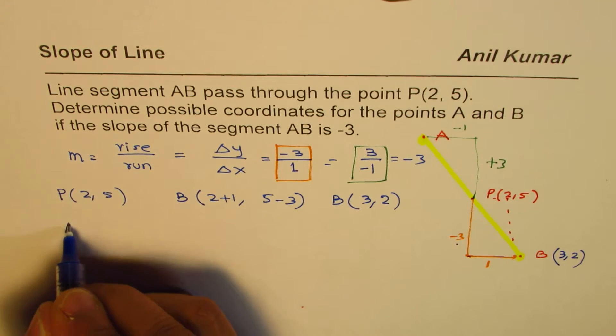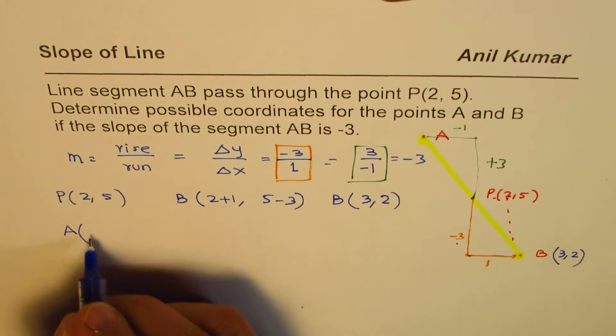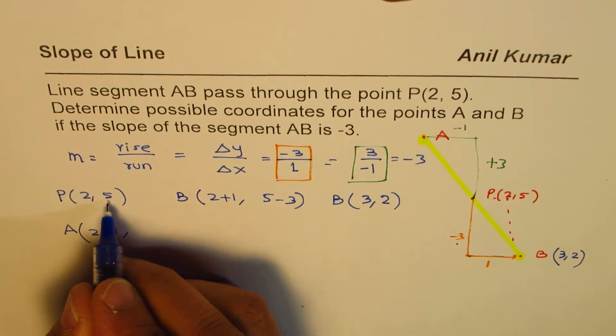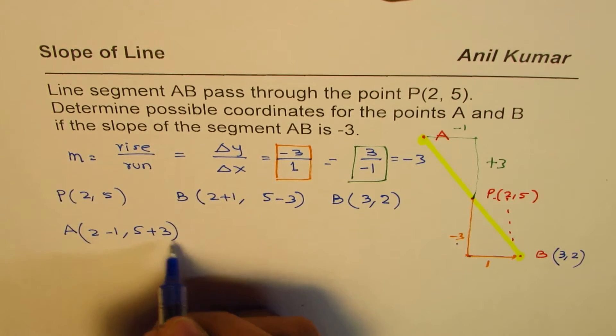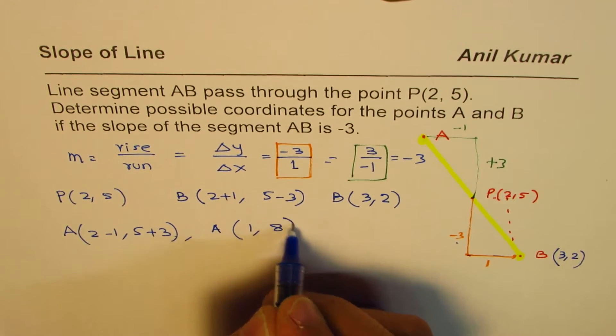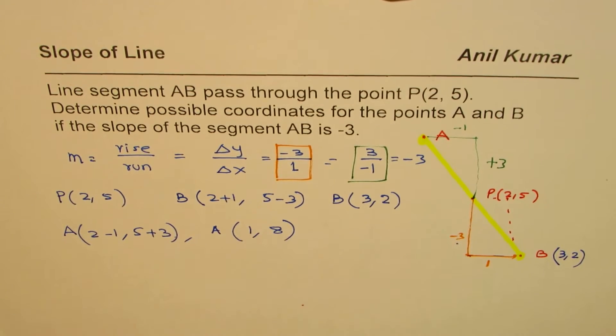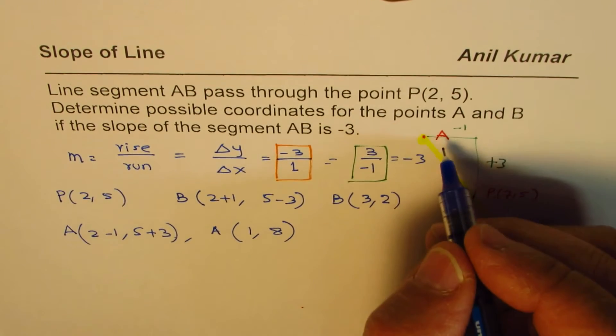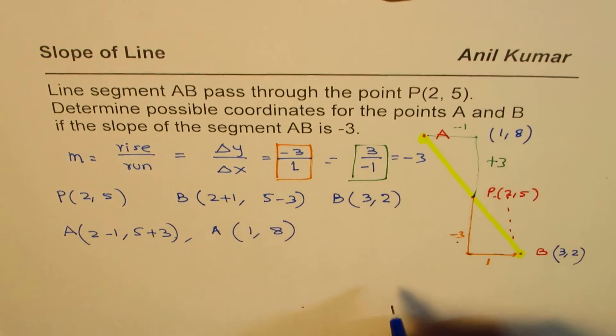So what should be the coordinate of A? If P is (2, 5), A should be from 2 we are going left 1, that means 2 minus 1. As far as Y value is concerned, up 3 is 5 plus 3. So that means A will be 2 minus 1 is 1 and 5 plus 3 is 8. So we get A should be equal to (1, 8).